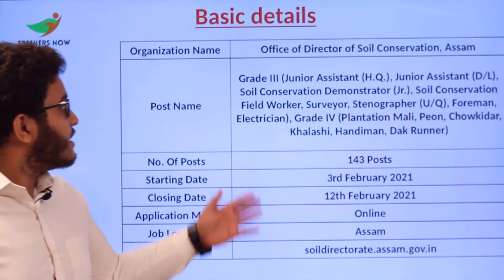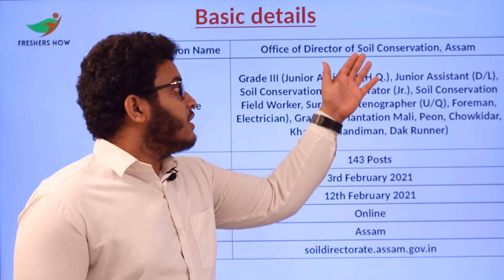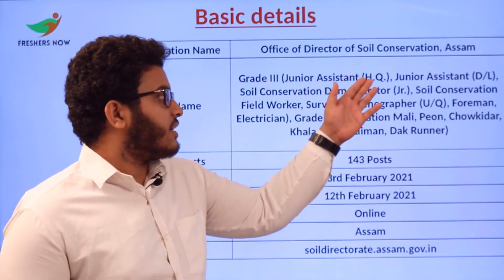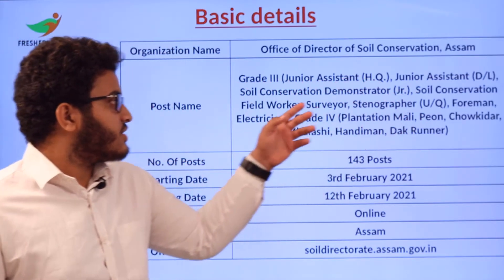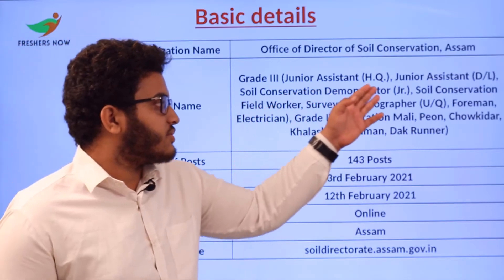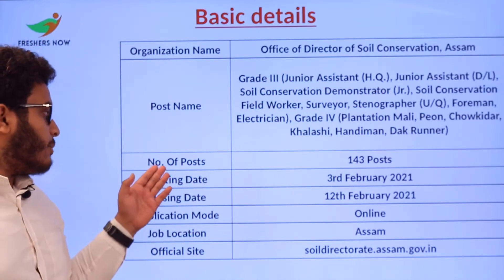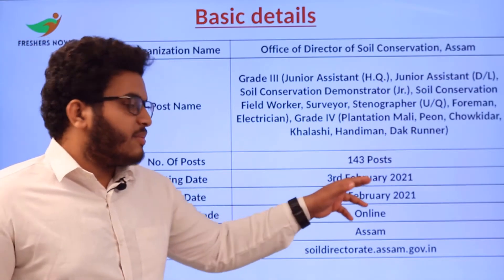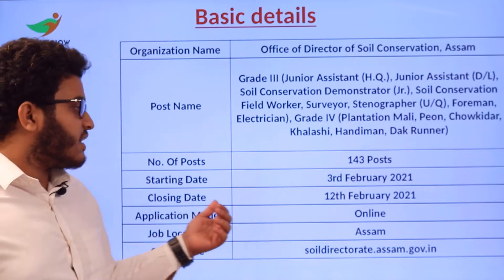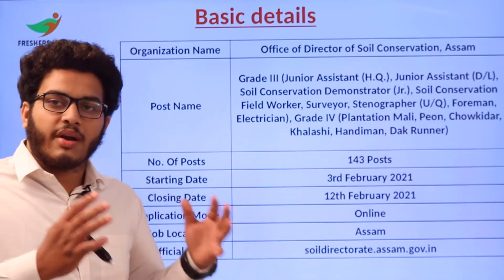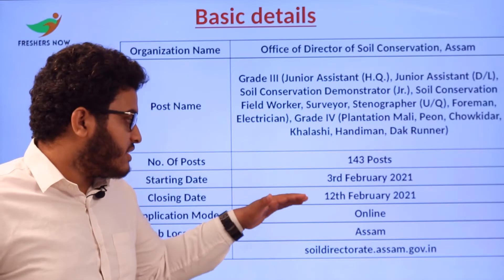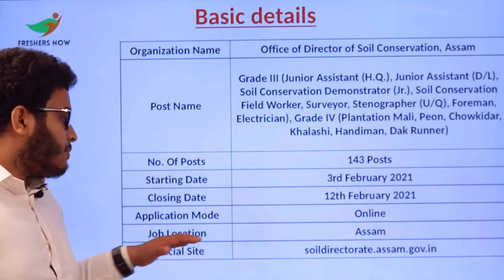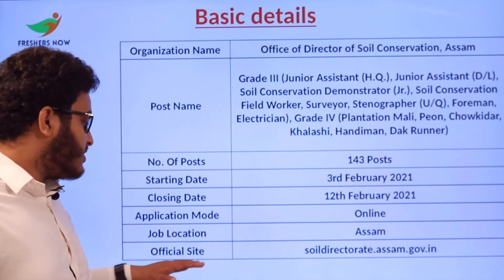Here are some basic details. The organization name is Office of Director of Soil Conservation, Assam. Post names include Grade 3 Junior Assistant Headquarters, Junior Assistant DL, Soil Conservation Demonstrator Junior, and others. Total posts: 143. Starting date to apply is 3rd February 2021 and closing date is 12th February 2021. Application mode is online and job location is in Assam.